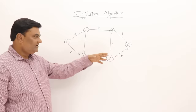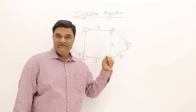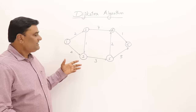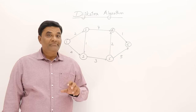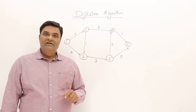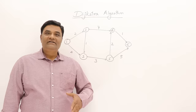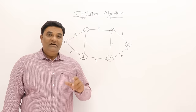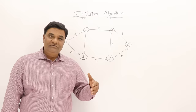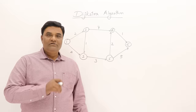If I select starting vertex as one, then I have to find the shortest path to all the vertices, maybe a direct path or via other vertices, and I can select any one vertex as a source vertex. As we have to find the shortest path, it is a minimization problem, and the minimization problem is an optimization problem. Optimization problems can be solved using the greedy method.